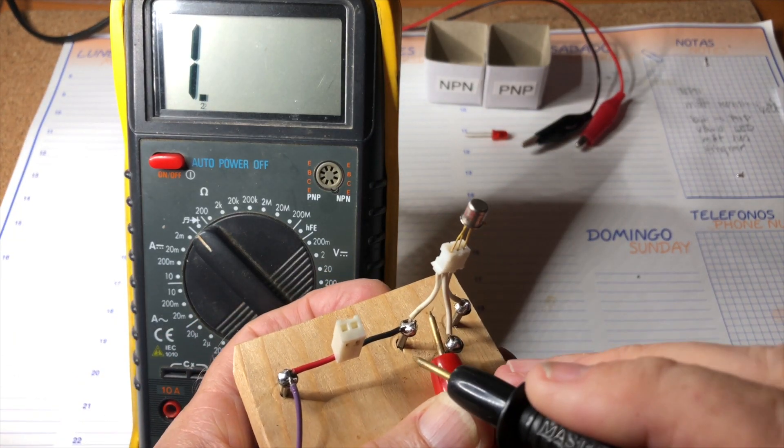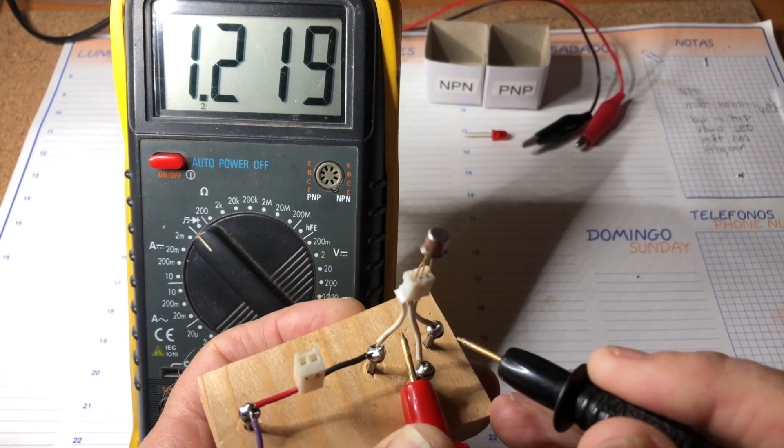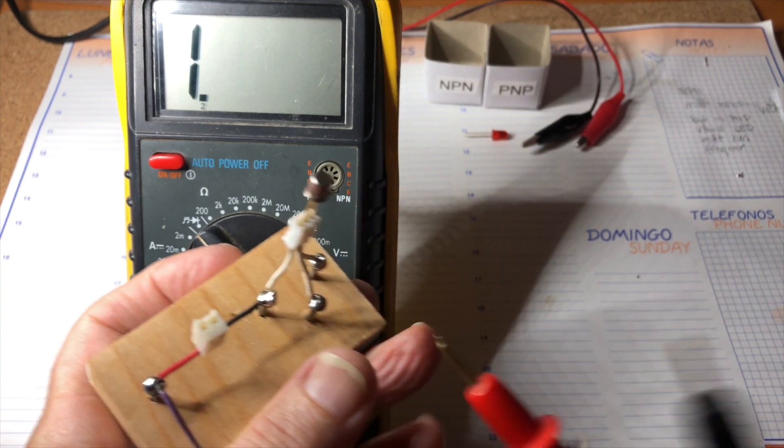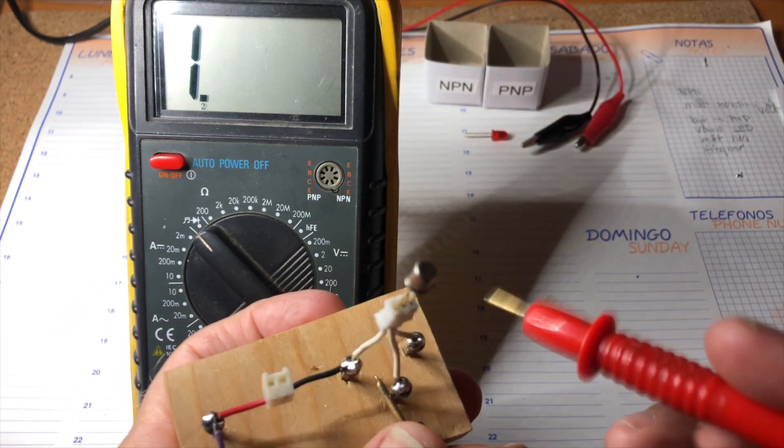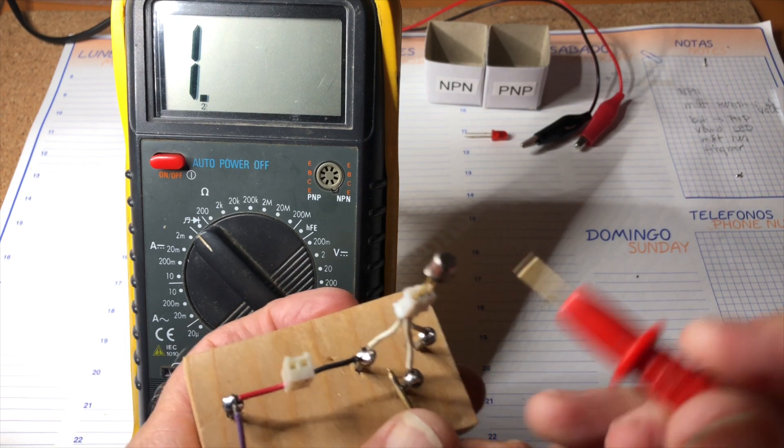With the voltmeter I put the positive pin on the base, the negative pin I put on the collector and the emitter. And this is an NPN transistor. So nothing will happen if you connect the negative pin to the base.